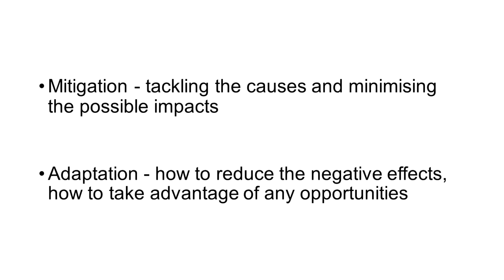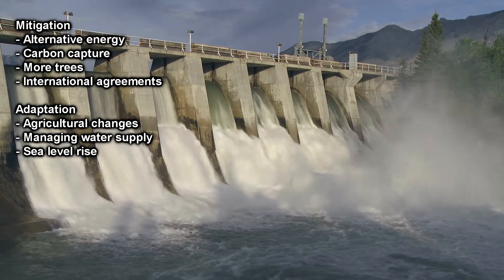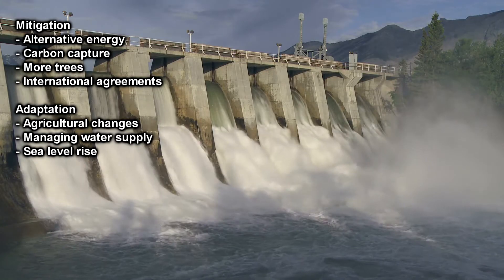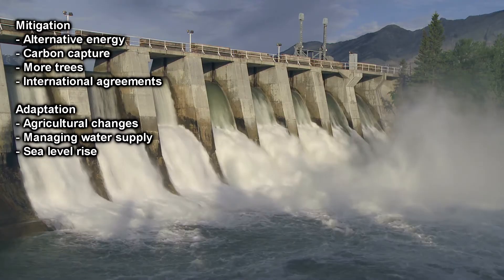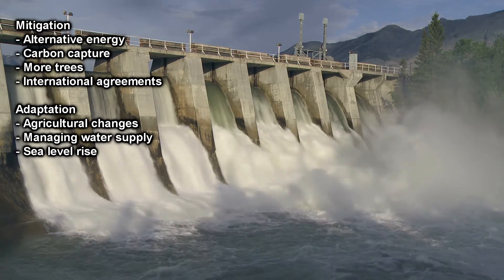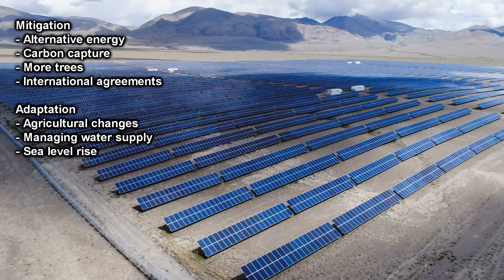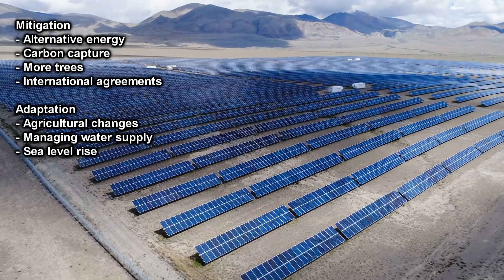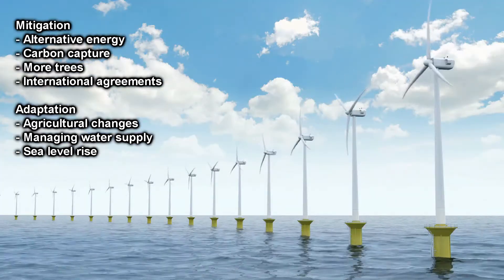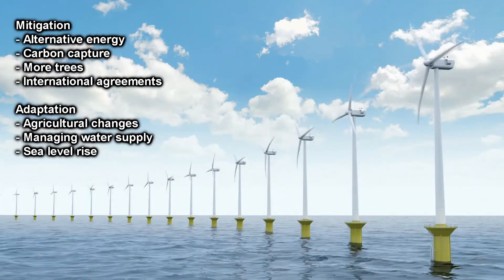There are several things we can do to mitigate climate change. Alternative energy production is the obvious one: that includes electric cars, burning fewer fossil fuels, and switching to hydroelectric power, solar power, and wind power. Changing our energy production to cleaner, more sustainable methods will help minimise the causes of climate change.